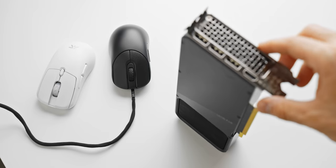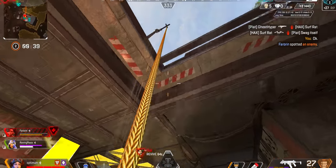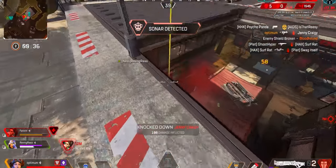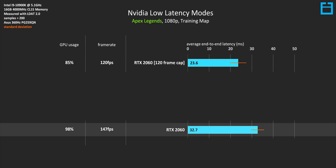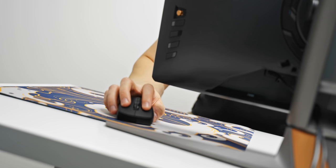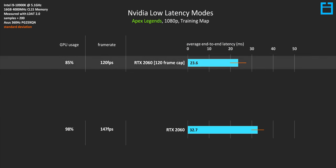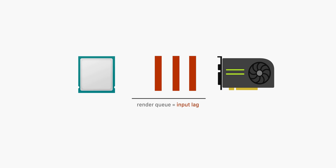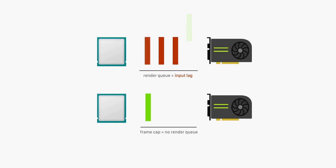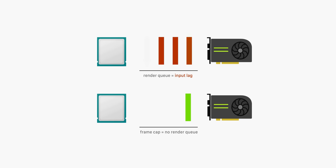Capping your frames the right way has a few main benefits. The first is actually lower input lag compared to letting your frames run completely uncapped. With an RTX 2060 in Apex Legends running at about 150 FPS, the average end-to-end latency is around 33 milliseconds — from the moment you click your mouse to the moment your gun displays a muzzle flash on screen. By capping frames to 120, you can reduce that input lag by around 9 milliseconds. This happens because frame capping eliminates the render queue sent to the GPU; as soon as a frame is scheduled by the CPU, there's no waiting in queue — it's rendered right away and displayed on the next monitor refresh.